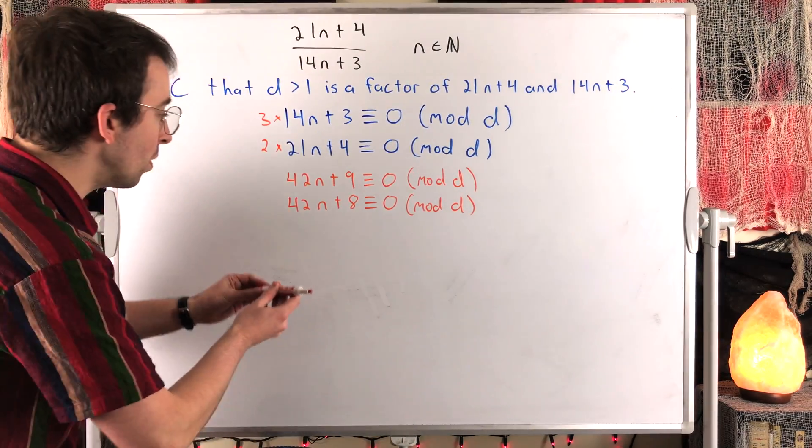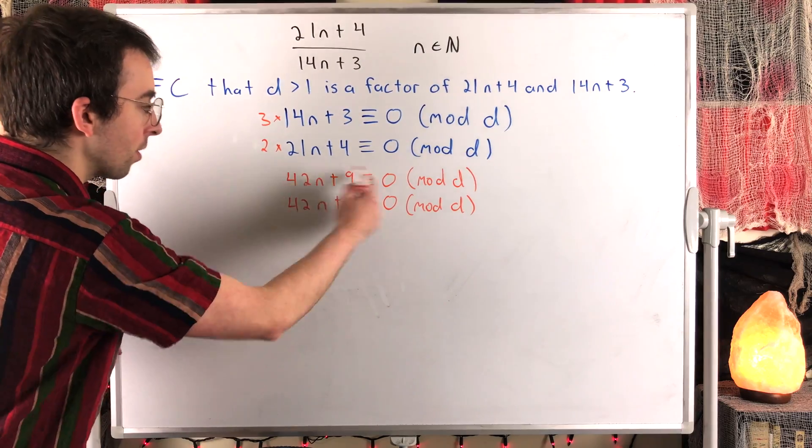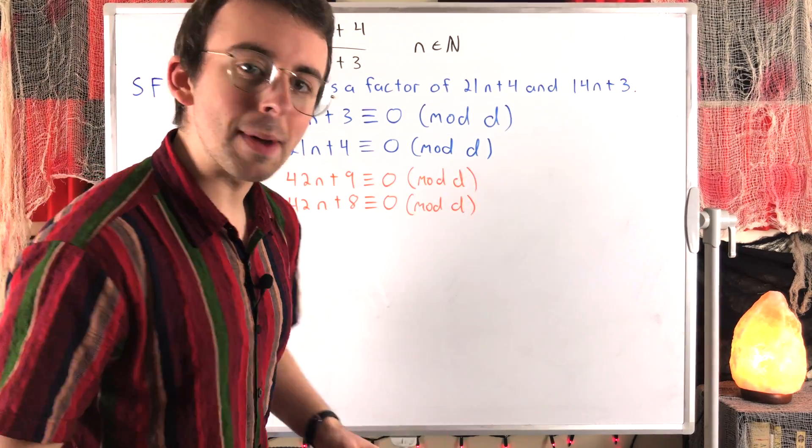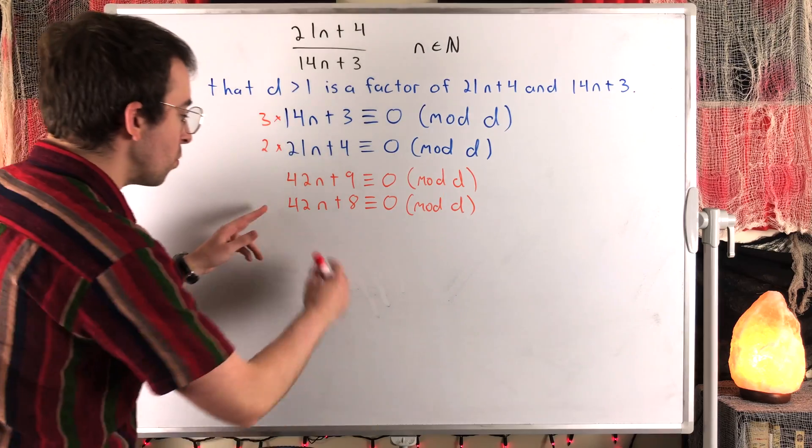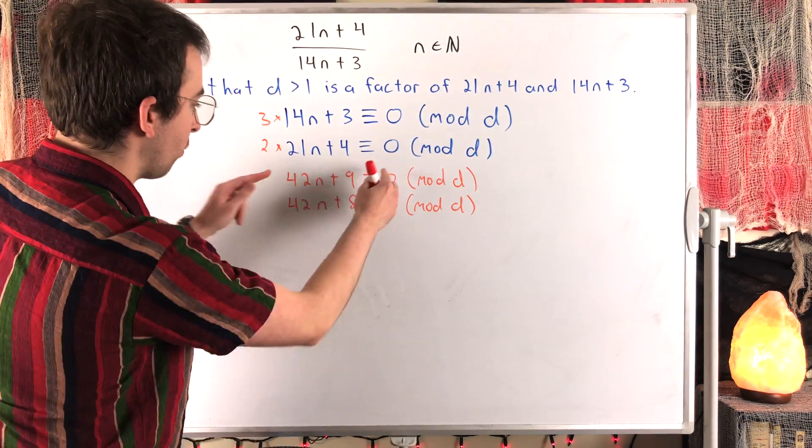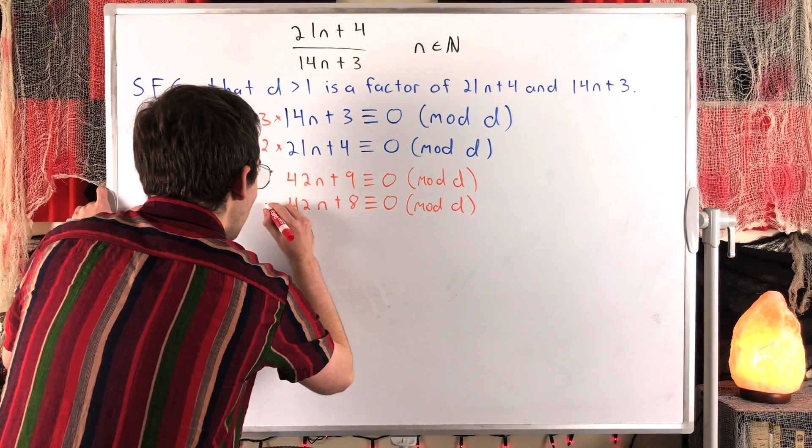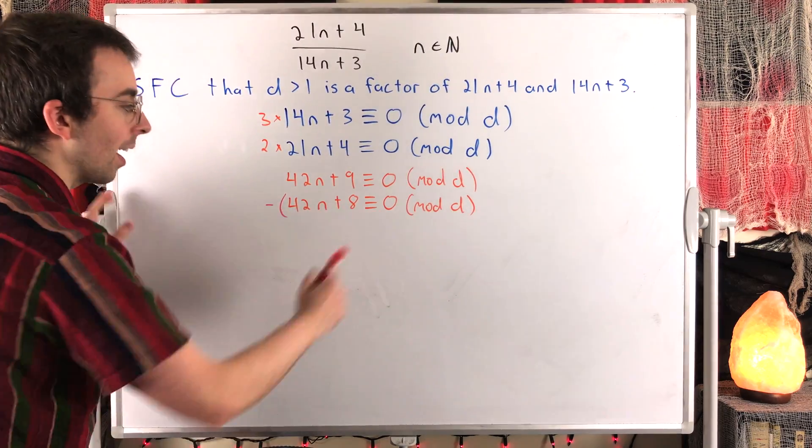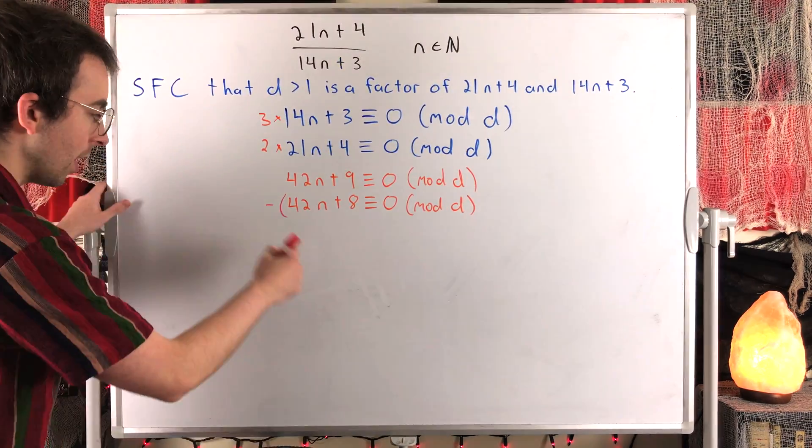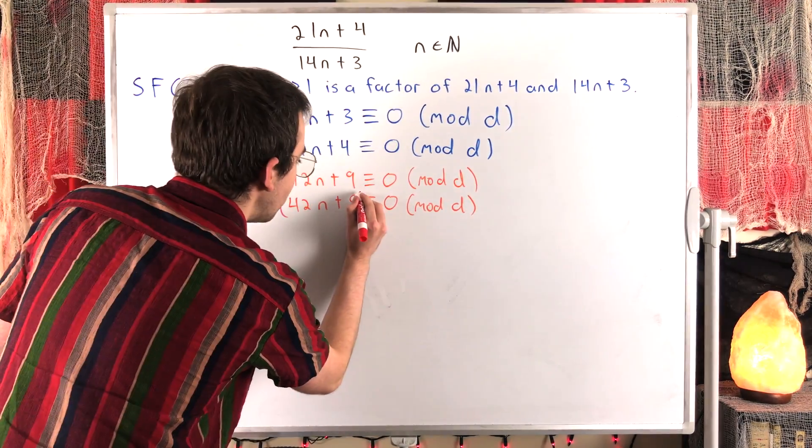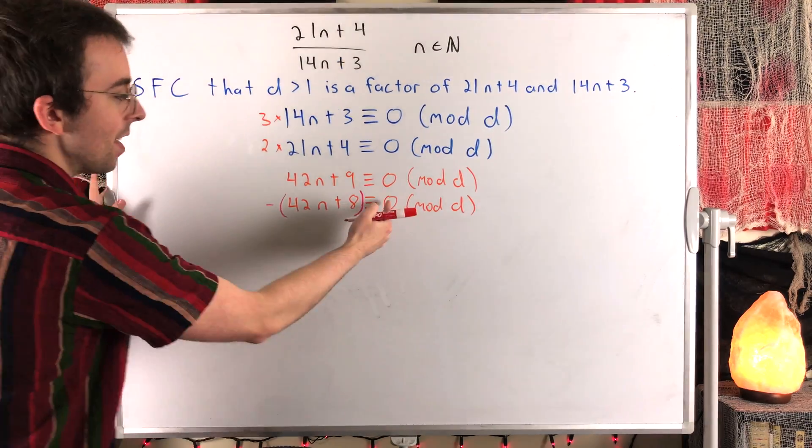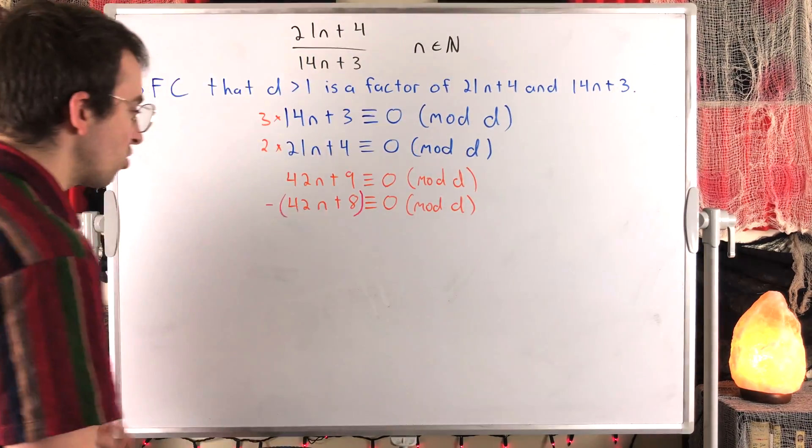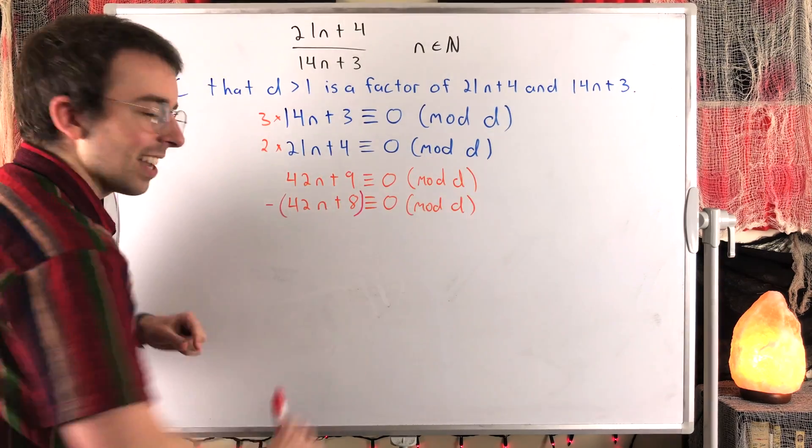Now that we've got the same n terms in both congruences, we can combine them to eliminate the n. What we want to do is subtract this congruence from this one. So we'll just sort of write a negative here. If we multiply this whole congruence by negative 1, we would get negative 42n plus 8, and then negative 1 times 0 is just 0, so that doesn't change. And then we combine this with this.